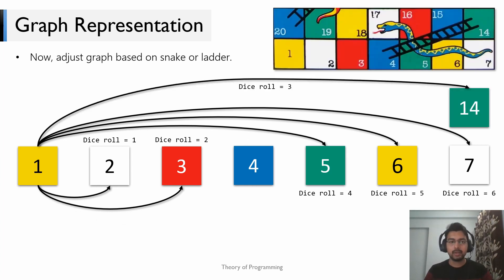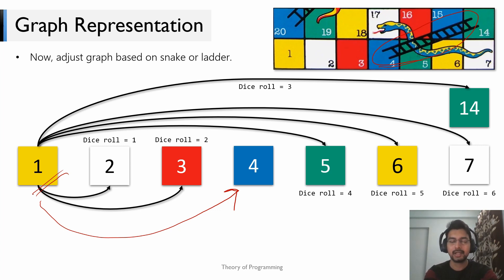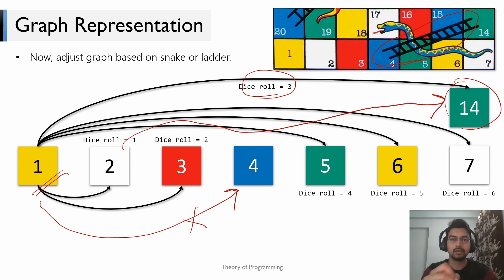Now that we have our basic graph setup, we need to modify it based on the snakes and ladders. Consider a ladder from 4 to 14. If you're at block 1 and your dice roll outcome is 3, you would normally go to vertex 4, but there's a ladder which takes you from vertex 4 to 14. So in reality, the edge representing dice roll 3 should point to vertex 14. All possible outcomes leading to vertex 4 should now lead to vertex 14 — effectively replacing vertex 4 with vertex 14 in the entire graph. This makes sense because it is impossible to stay at vertex 4 at the end of your turn.